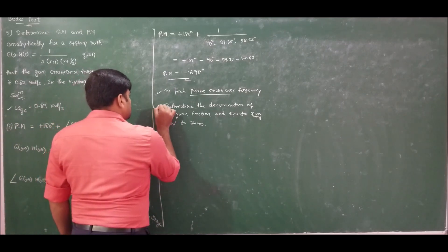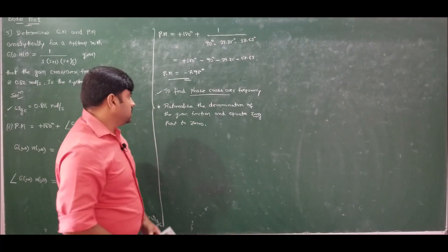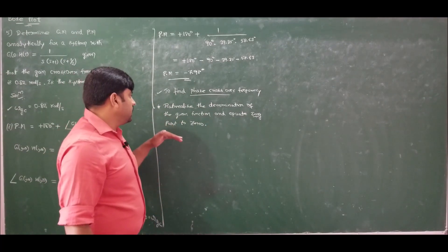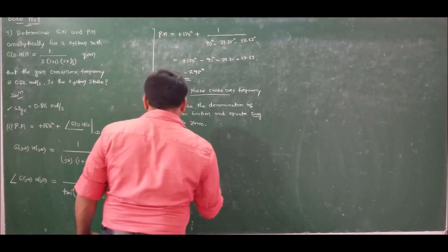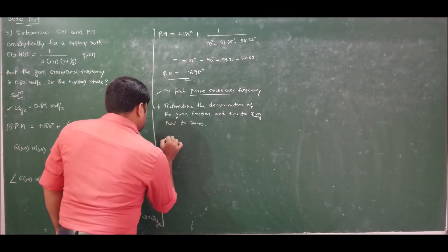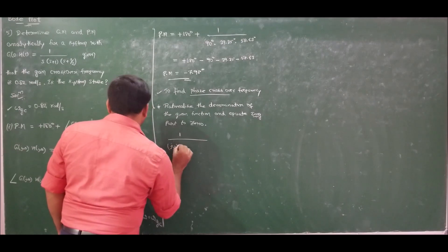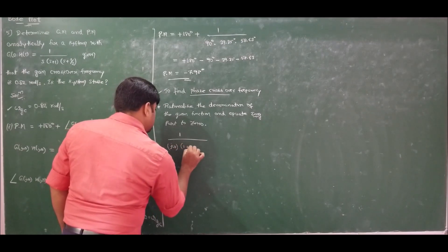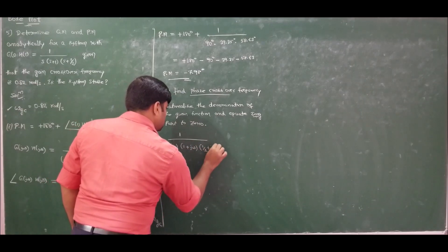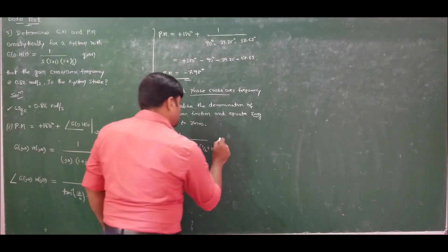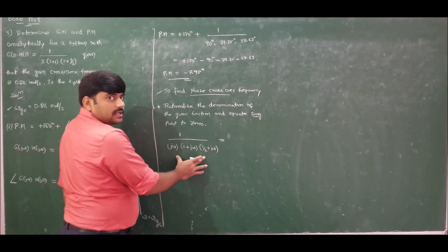This is very important — make a note: to find phase crossover frequency, rationalize the denominator of the given function and equate the imaginary part to zero. Our function is 1 / [jω(1 + jω)(0.5 + jω)]. Rationalizing means multiplying and dividing by the conjugate of the denominator.